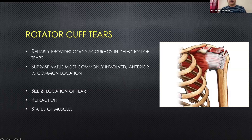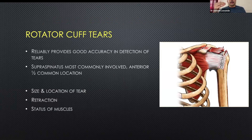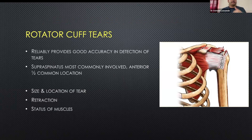Supraspinatus is the most commonly involved tendon and the anterior half is the commonest location. What we are supposed to see is the size and location of the tear, whether it's from the bursal or articular surface, the amount of retraction, and the status of the muscles — telling the surgeon the distance from the rotator interval if they are planning an arthroscopic repair.